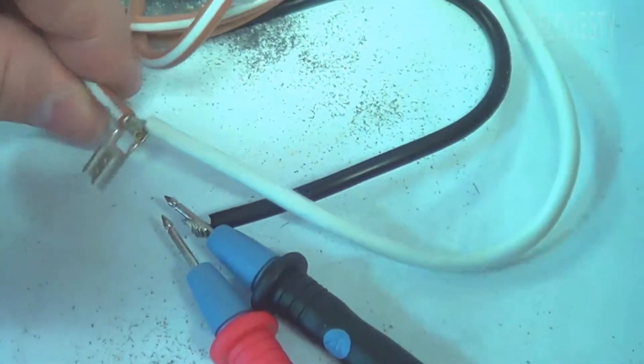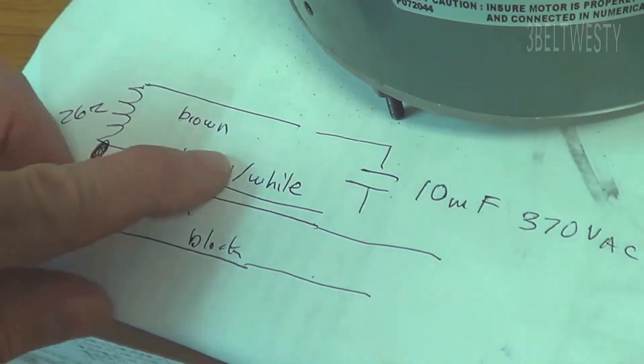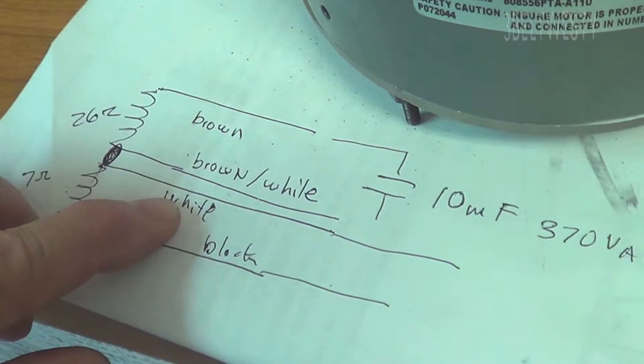On this motor, the white, the brown, and the white are connected together. So inside the motor, you've got the brown, white, and white connected together.